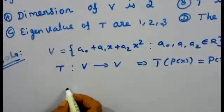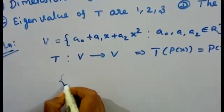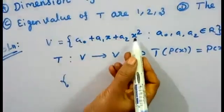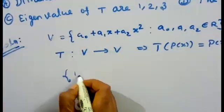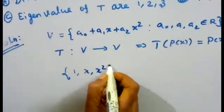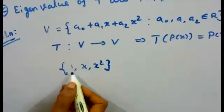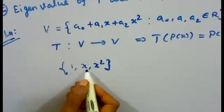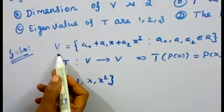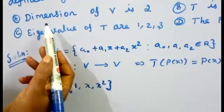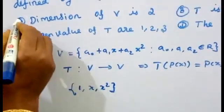The dimension of V is the number of basis elements. The standard basis is {1, x, x²}, so the number of basis elements is 3. Therefore the dimension of V is 3, not 2. The first option is wrong.